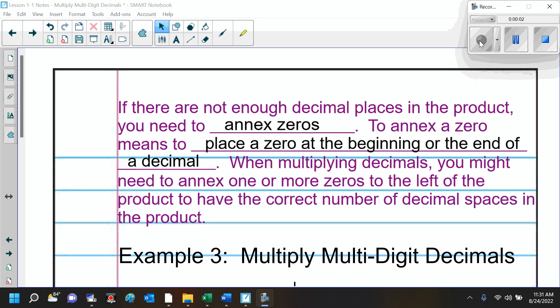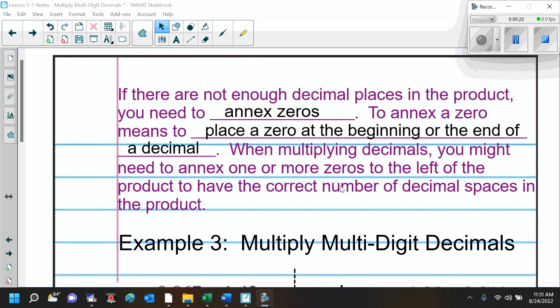So this is part 2, a continuation of yesterday's lecture for lesson 1-1, which is multiplying decimals. When multiplying decimals, you might need to annex one or more zeros to the left of the product to have the correct number of decimal places in the product. What we're going to do is an example together.